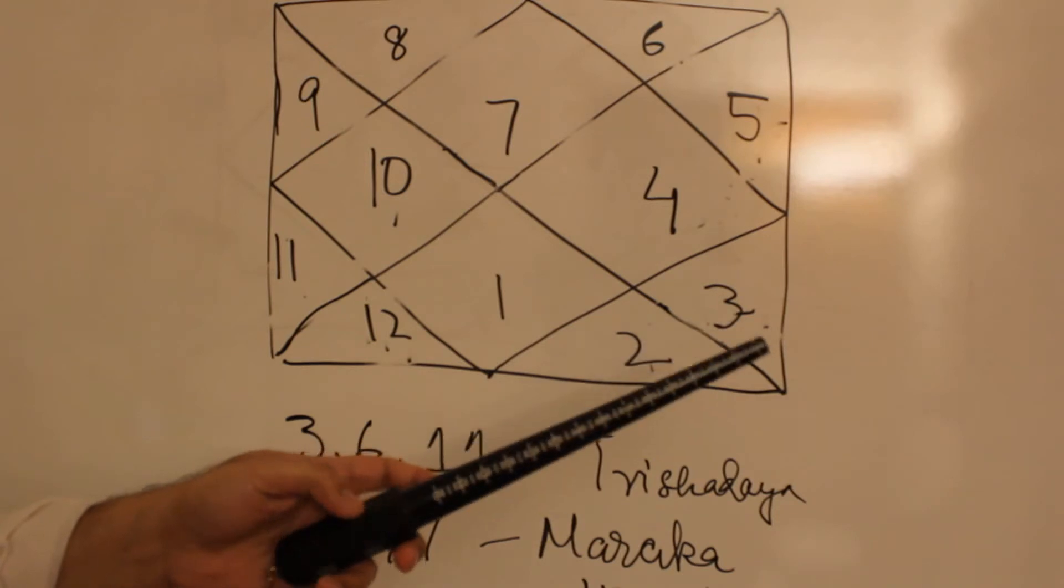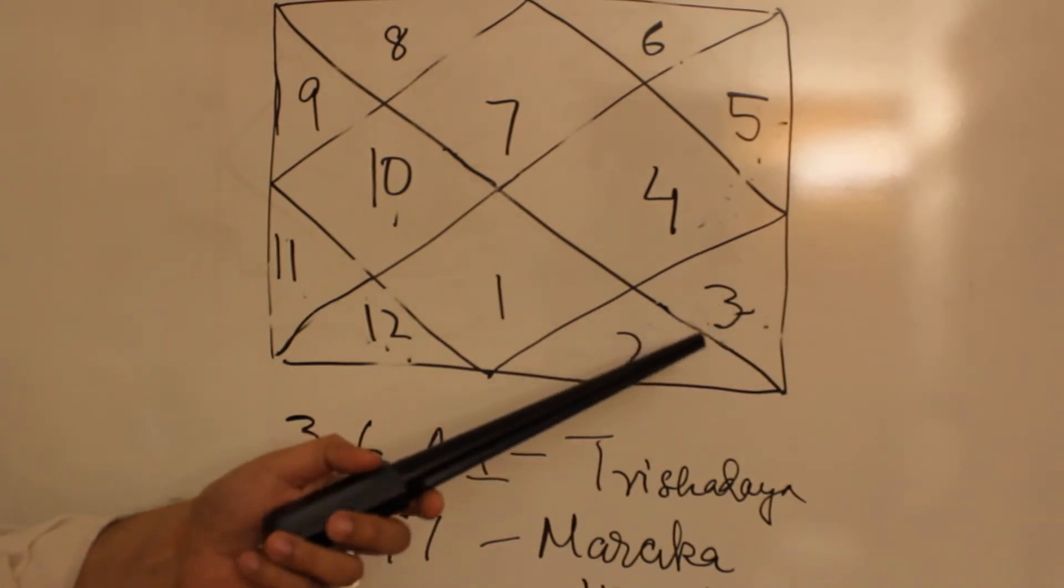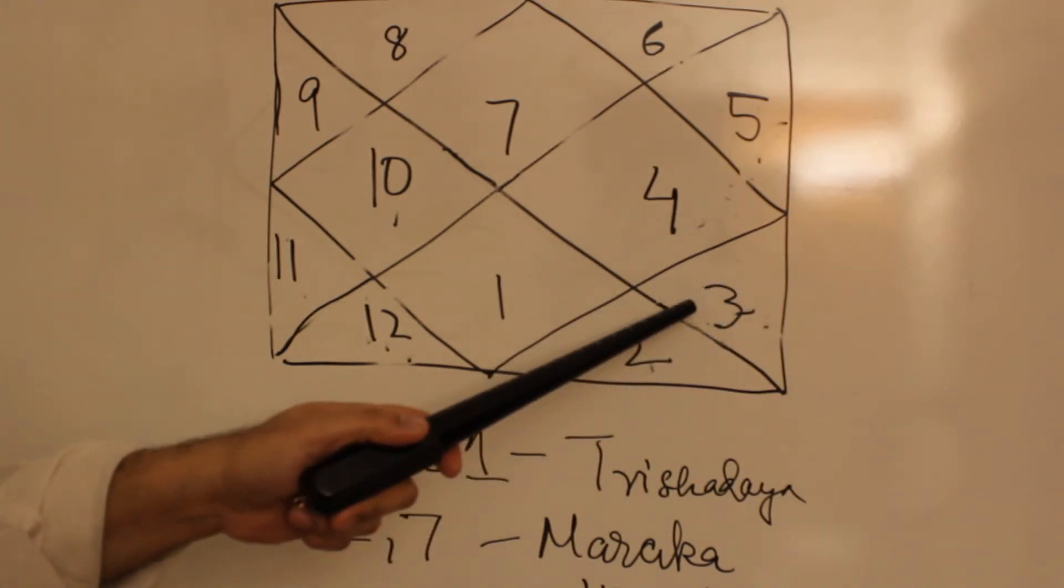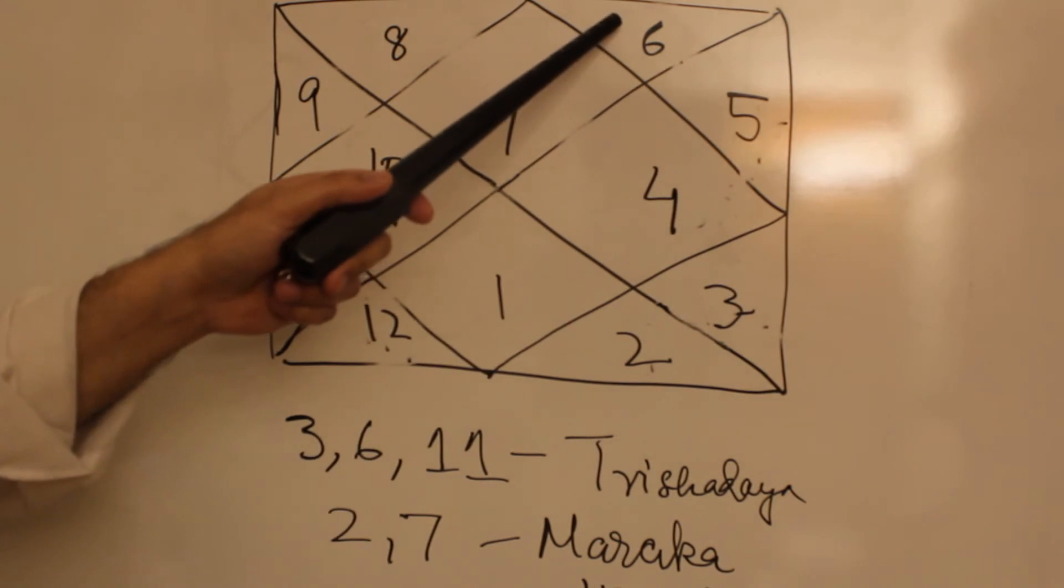Coming to Mercury. Mercury is auspicious since it owns the ninth house and an impressionable twelfth house.